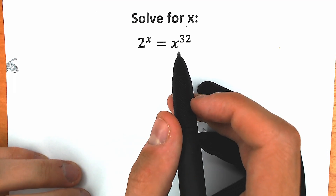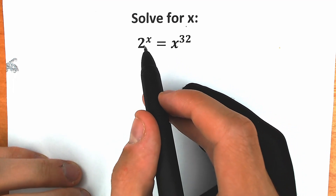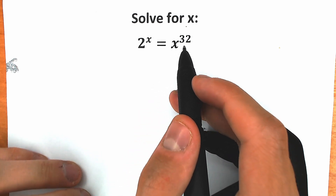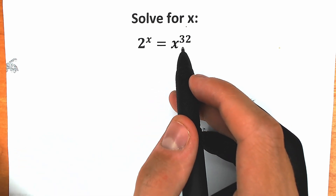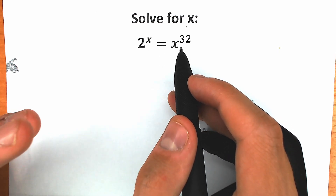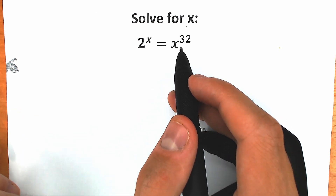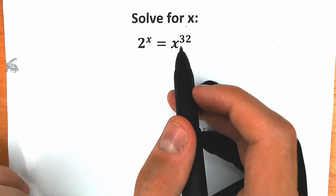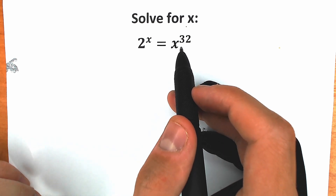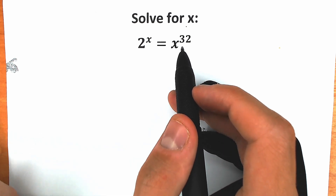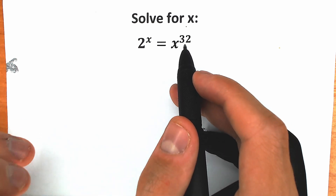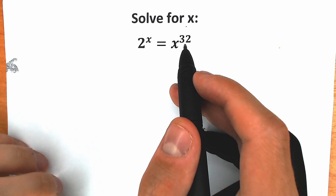Today we have a really interesting exponential equation: 2 to the x equal to x to the power 32, and we need to find x. If you have the right answer, you can write your answer down in the comment section, and write your suggestions there too. We will check your answers here in just a few minutes.